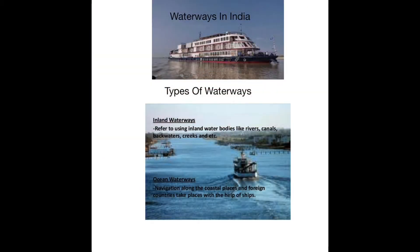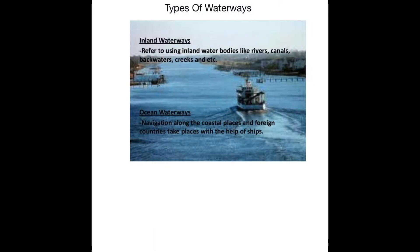Waterways are the cheapest mode of transport, especially in India, because India has a long coastline of approximately 6000 km and inland navigation waterways of about 14500 km in length. Water transport can be broadly divided into two types: inland water transport and coastal shipping, also known as oceanic waterways.